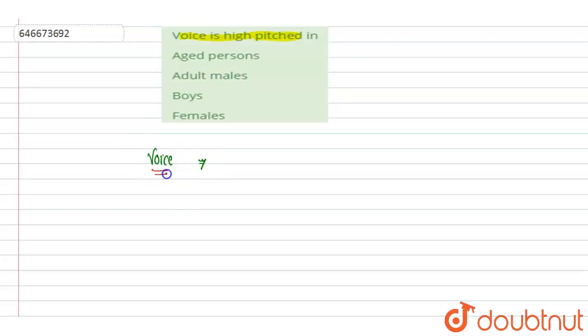So that is vocal cord or the larynx, that is the voice box. These vocal cords, the pitching of voice, the pitch of voice depends upon length and thickness of the vocal cords.